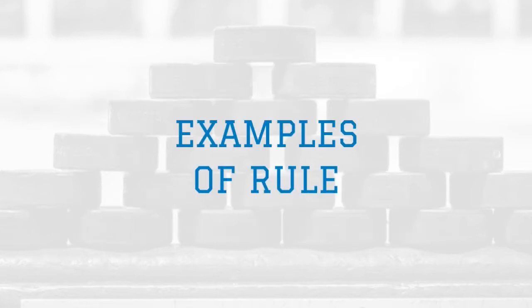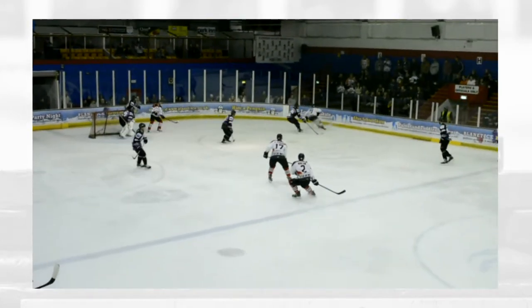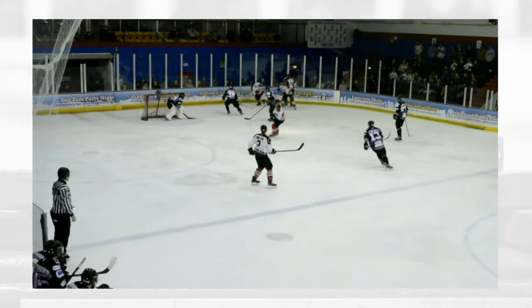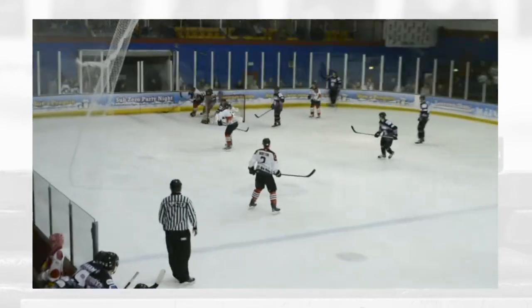Let's take a look at some examples. In this example, the team in white have the puck and the team in dark shirts are defending. White number 28 checks dark number 15 as he's attacking the puck carrier, impeding his route to the puck, and therefore is called for interference.